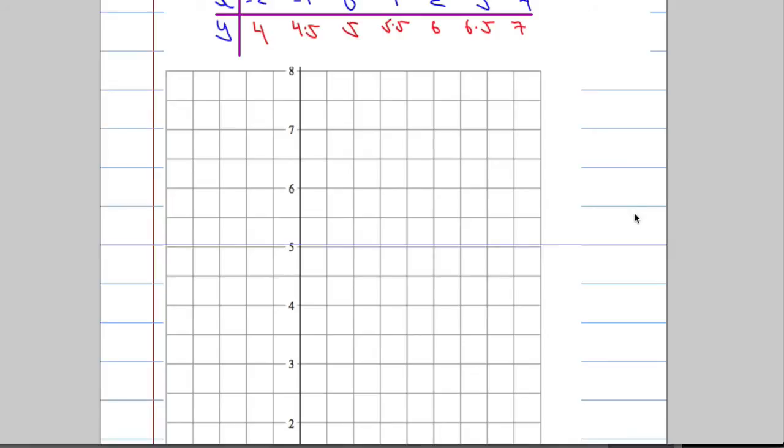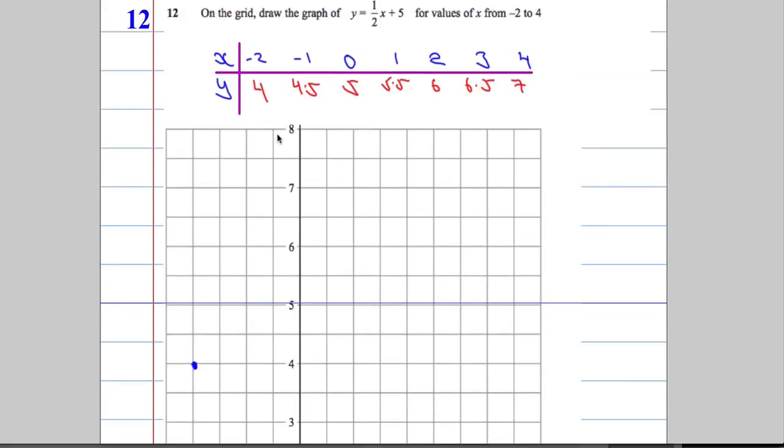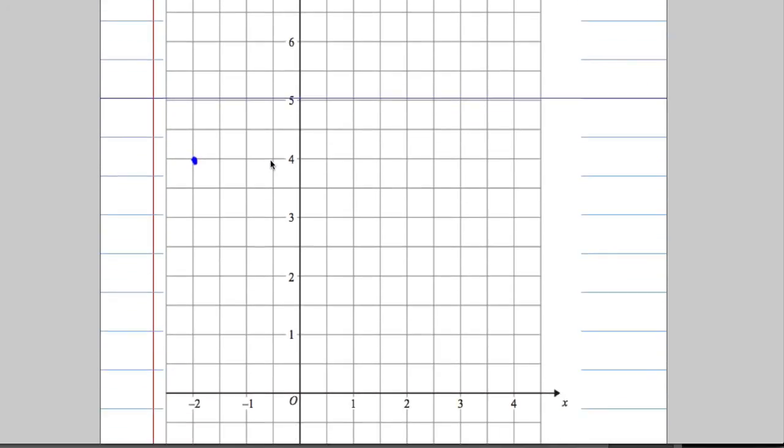Negative 2 and 4 has got to go on. So, negative 2, when x is negative 2, y is 4. When x is negative 1, y is 4.5, so negative 1, 4.5, and we're going to continue on in this fashion,